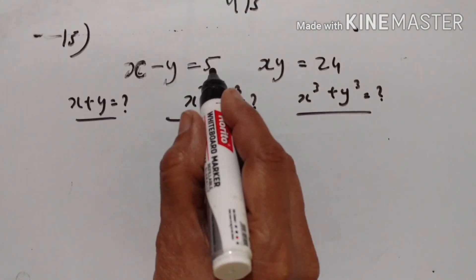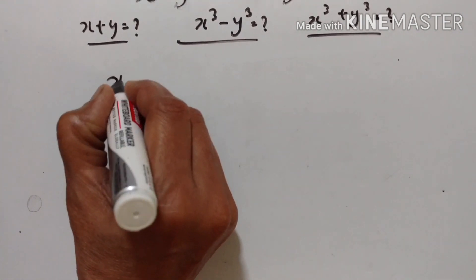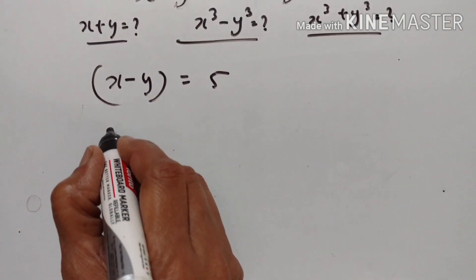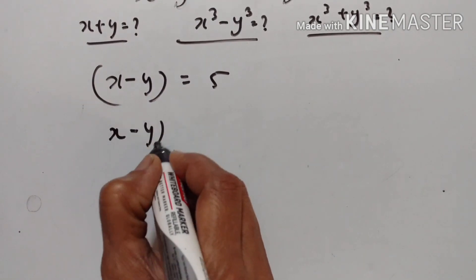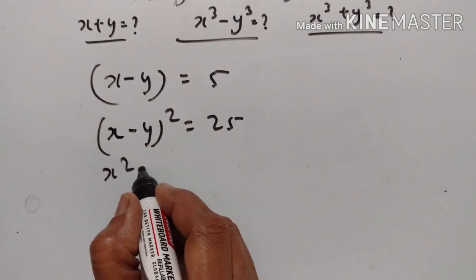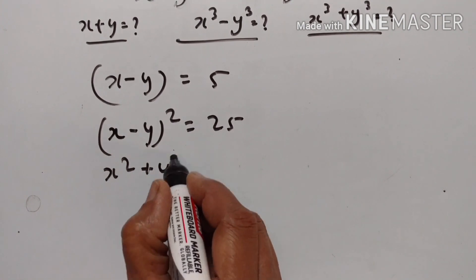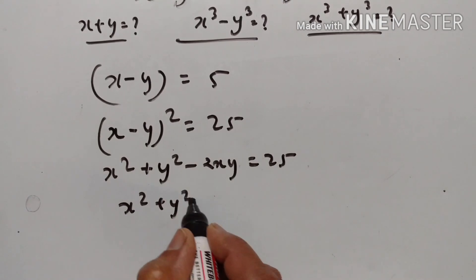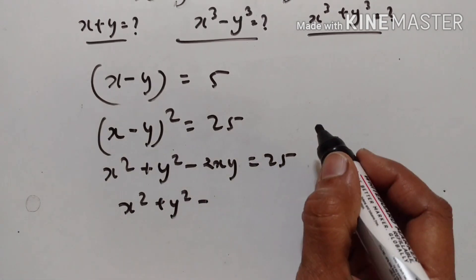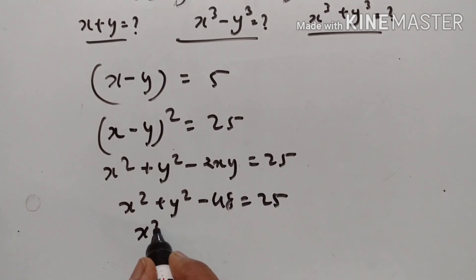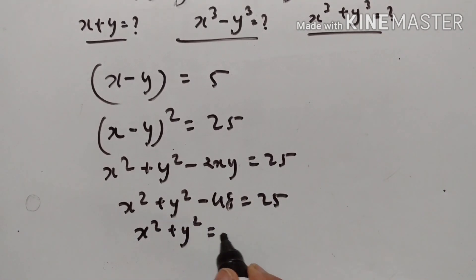The difference of these numbers is equal to 5, so x minus y is equal to 5. Squaring both sides, x minus y squared is equal to 25, which gives x squared plus y squared minus 2xy equal to 25. Since the product xy is 24, 2 into 24 is 48. So x squared plus y squared equals 25 plus 48, which is 73.